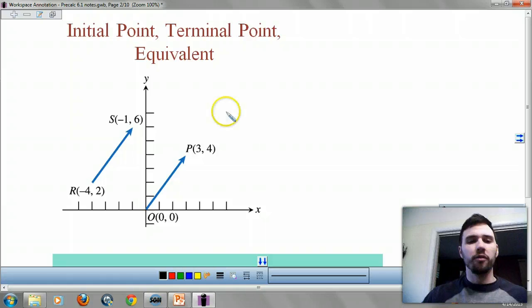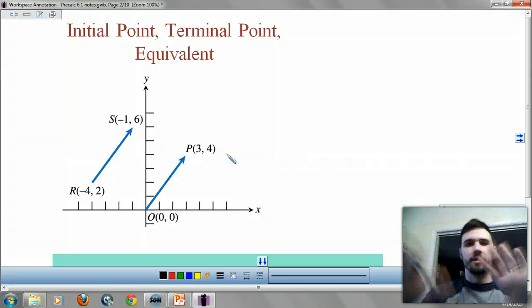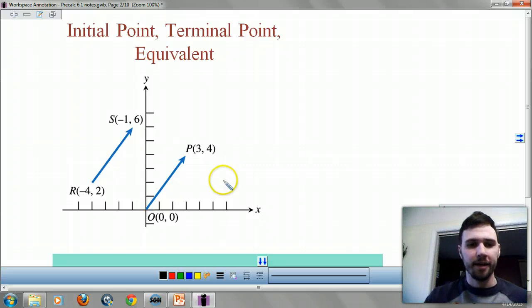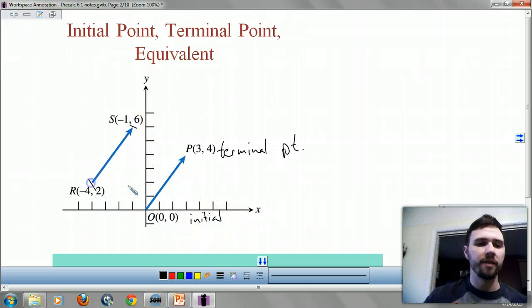You can add this to your original slide, guys. Pretty much what you need to know is your terminal point is your end. So this is your terminal point. And your initial is your beginning. And we usually like that to be at zero, zero. These are equivalent vectors because they go in the same direction and are the same length. They just have different starting points.